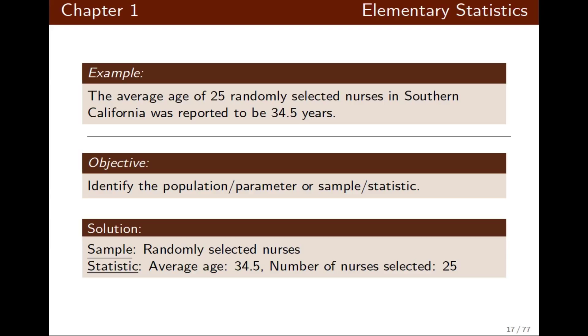Since 25 randomly selected nurses is under study, this will be a sample that does not represent all nurses in Southern California. So the keyword is 'randomly selected,' and the average age of these 25 randomly selected nurses will be a statistic—a numerical value that describes the mean age.